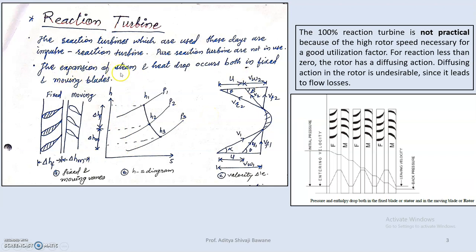The expansion of steam and heat drop occurs in both the fixed and moving blades. The enthalpy drops from h1 to h3. If we consider the ideal drop it will be in a straight line — h1-dash — and for the actual case h3-dash. The ideal enthalpy drop is compared with the actual enthalpy drop.